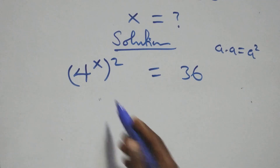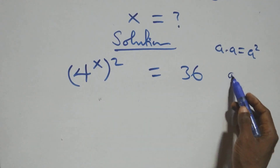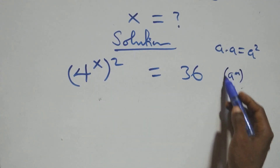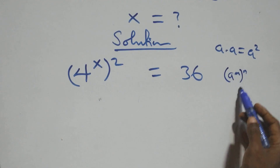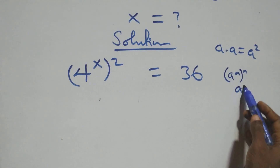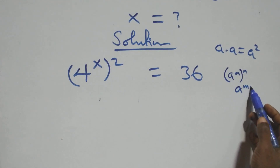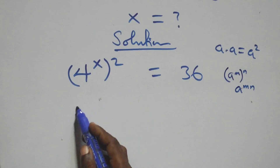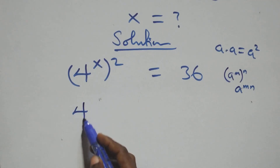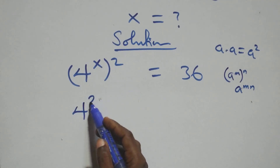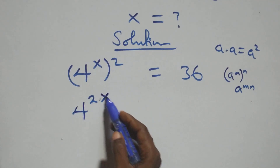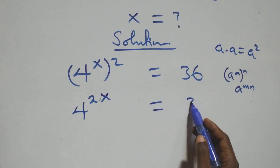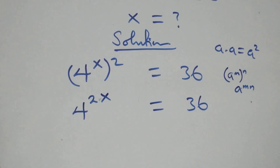The next step: this also follows when we have a raised to power n, raised to power m — the same thing as a raised to power m·n. So this power multiplies and we have 4 raised to power 2x equals 36.